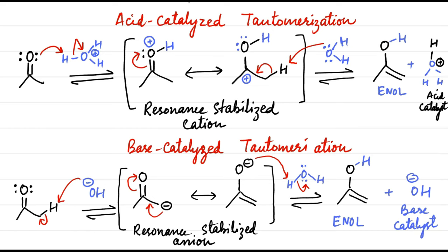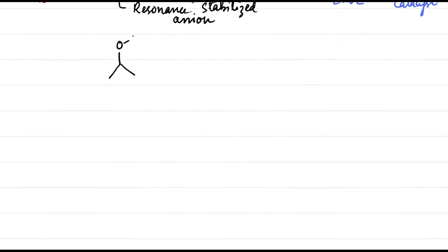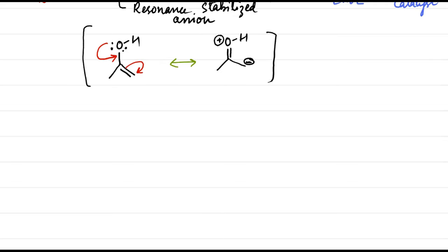Unless extremely rare conditions are employed, you should always assume that tautomerization will occur if possible, and an equilibrium will quickly be established favoring the more stable keto tautomer. The enol tautomer is generally present only in small amounts, but it is very reactive. Specifically, the alpha position is very nucleophilic due to resonance. In the second resonance structure, the alpha position exhibits a lone pair, rendering that position nucleophilic. The effect of an OH group in activating the alpha position is similar to its effect in activating an aromatic ring.